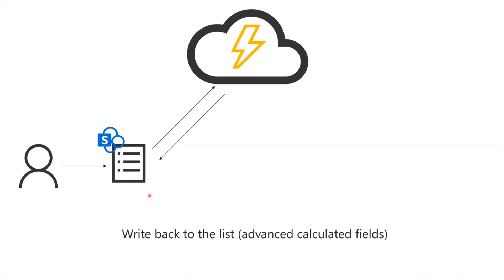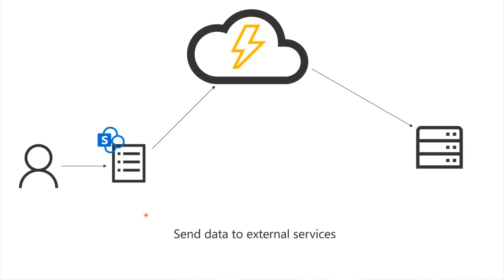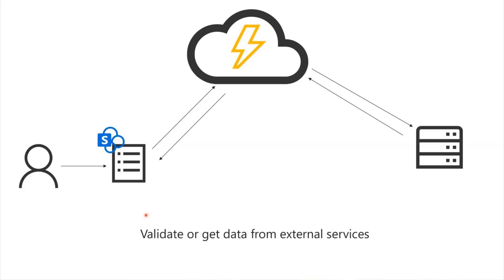You can use that to write data back to the list — for example, some kind of advanced calculated fields. Or you could do verification, like using two fields to generate a unique primary key across two fields to say you can't have these two fields be identical across list items. You can also, because we're running on a web server with code, do really whatever you want — send data to an external service, do your own audit log on another system, or get data from another service and write it back to the list, such as integrations with a time tracking system.